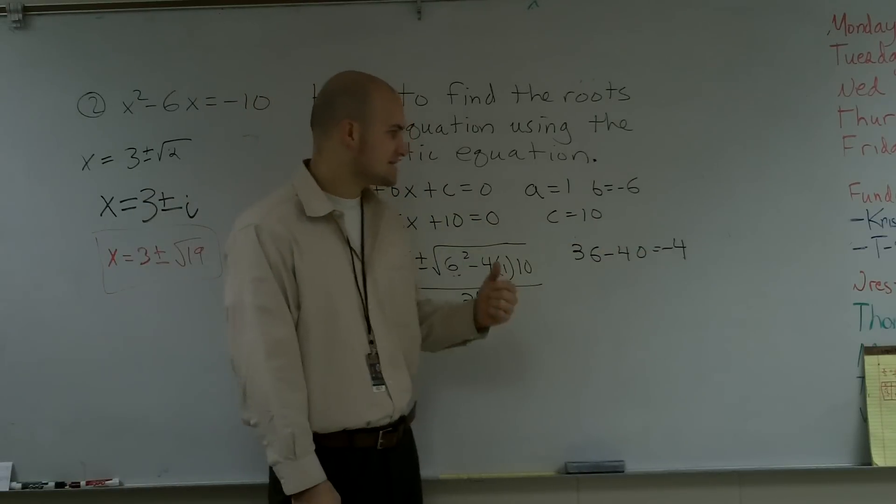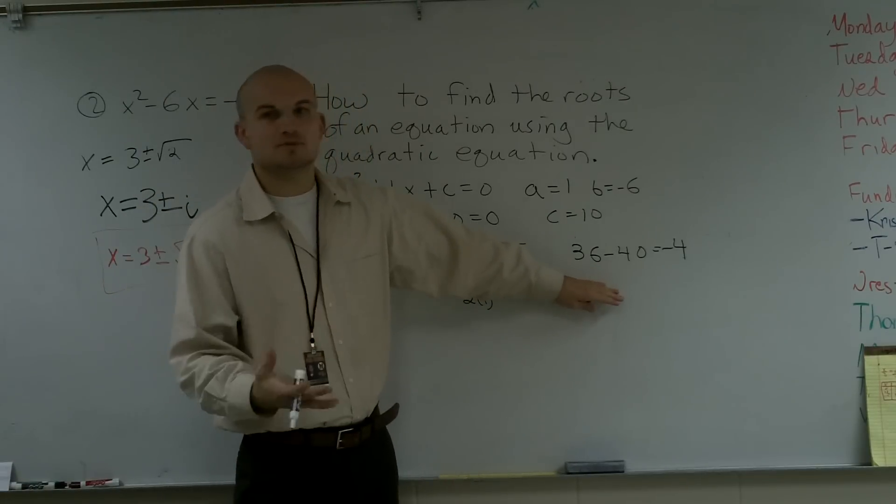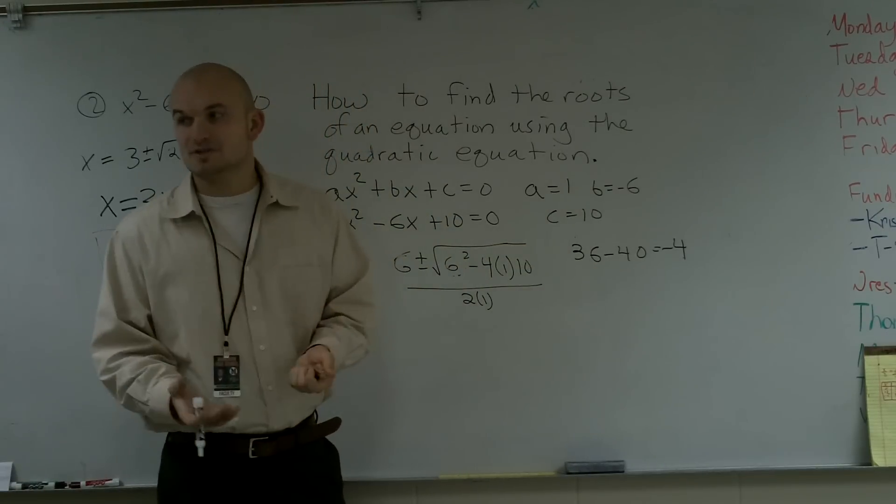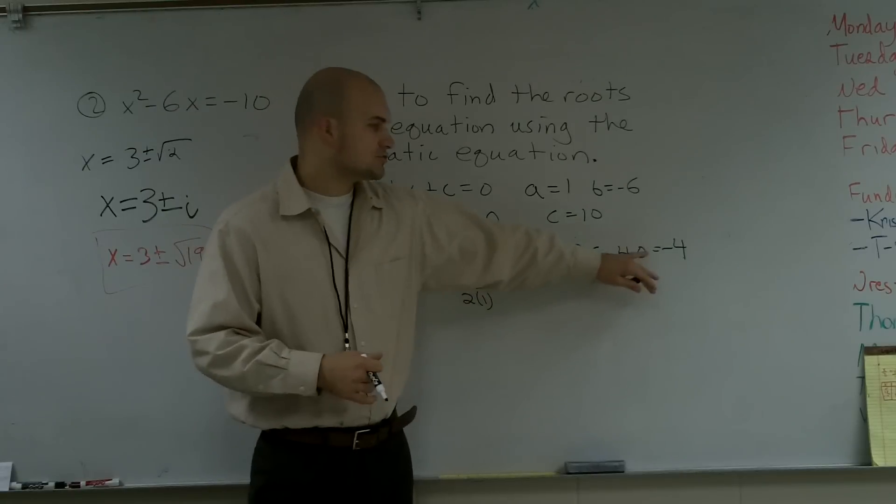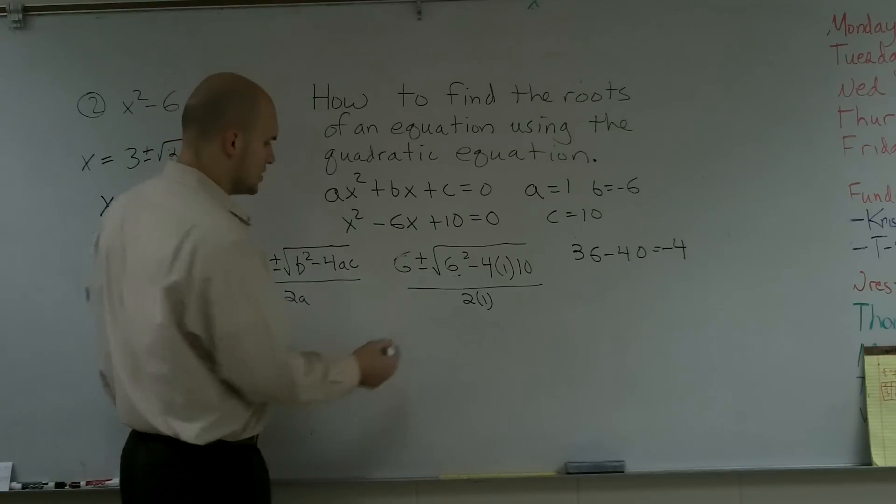When it's a positive answer, but it's not a square number, you're going to have two irrational solutions. And when your discriminant equals zero, you're going to have one real root.